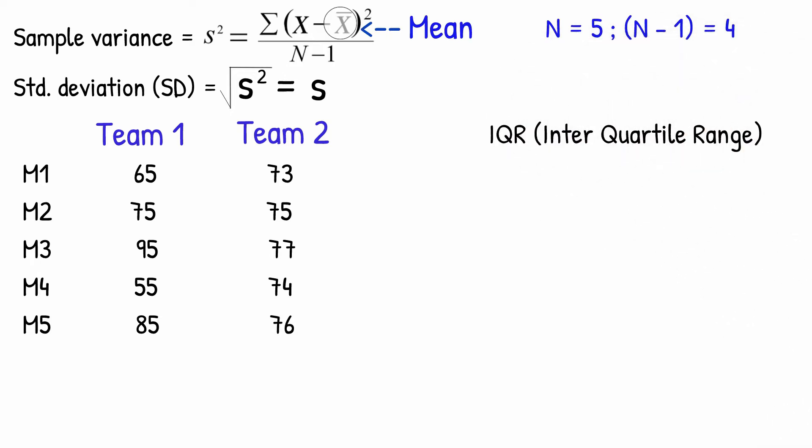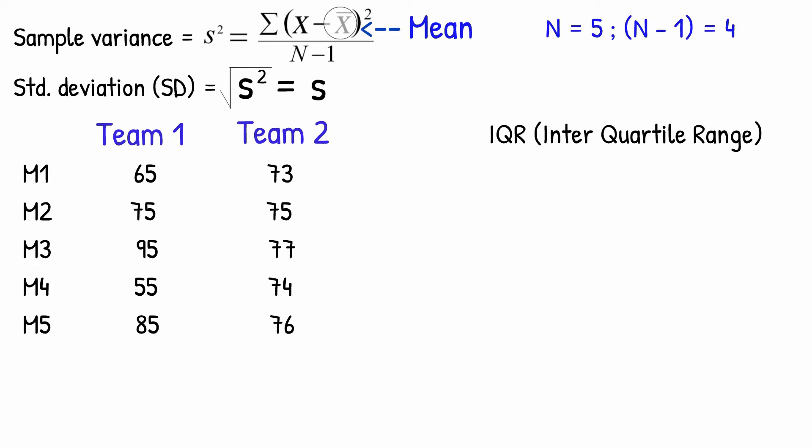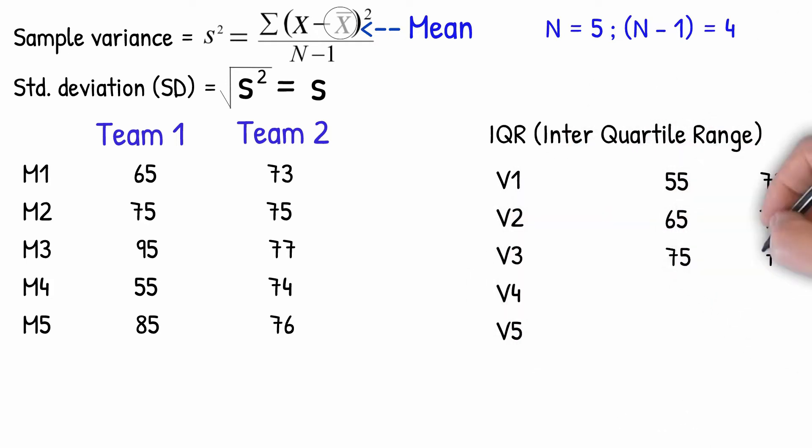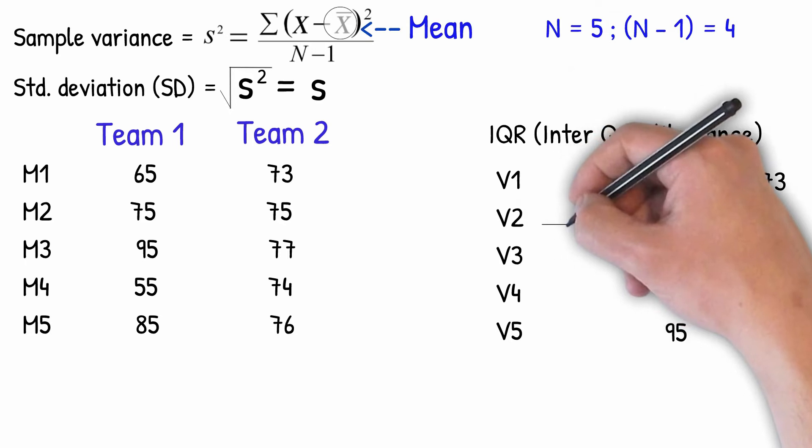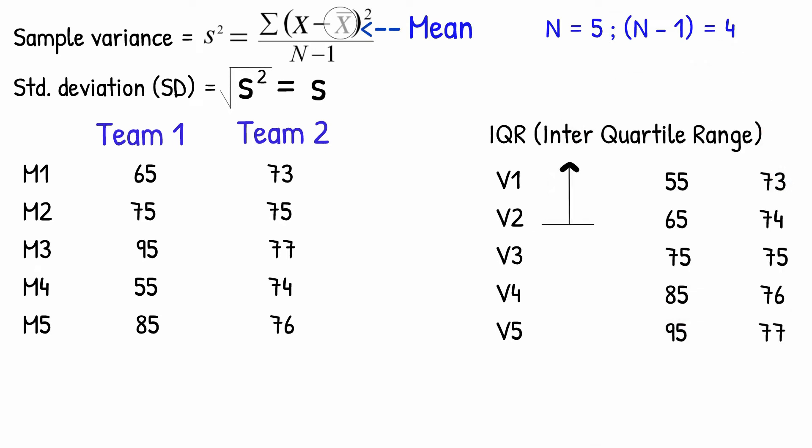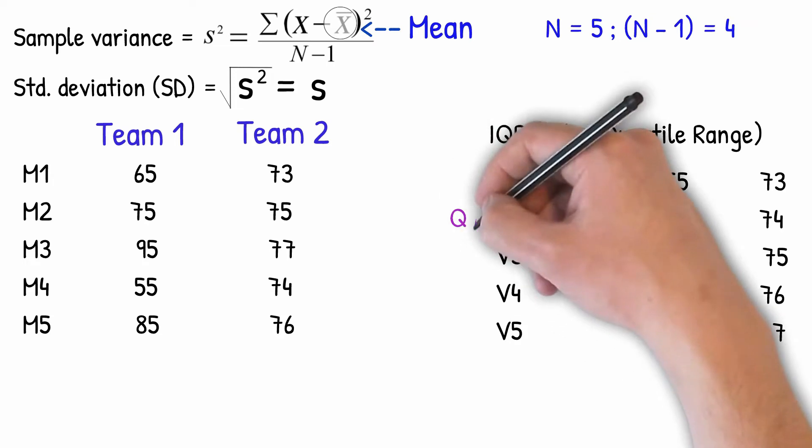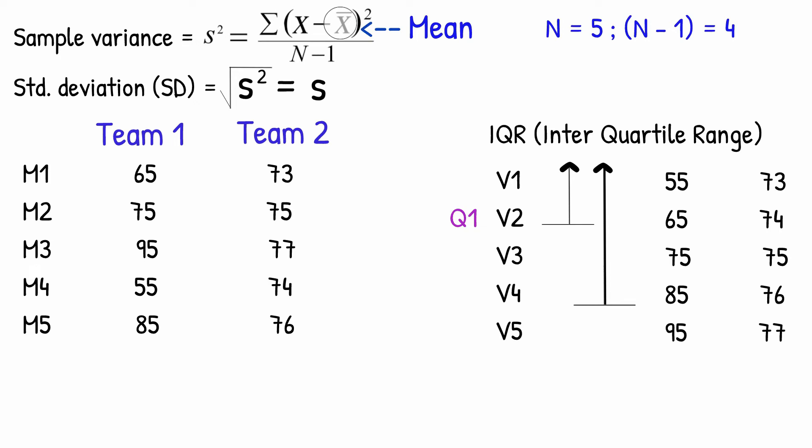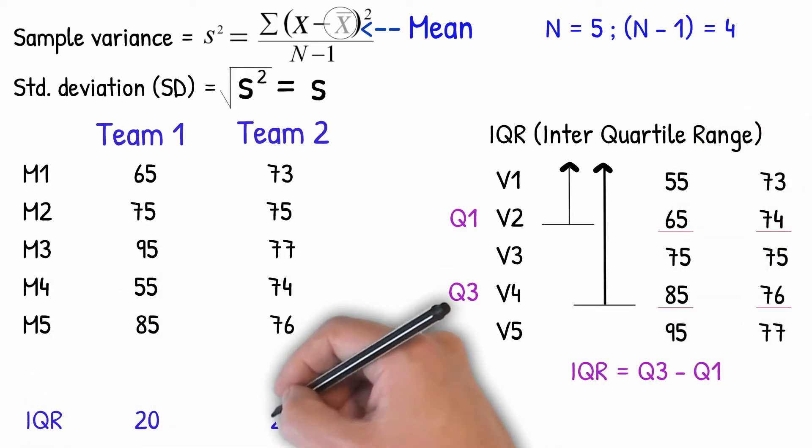In calculating median we identified the data value above and below which 50% of the data lies. For IQR we will arrange the data in ascending order and then we will identify the data value above which 25% of the values lie and call it the first quartile. Similarly, we identify the value above which 75% of values lie, denoted as Q3. IQR is simply the difference between Q3 and Q1, calculated like so.